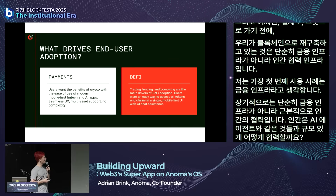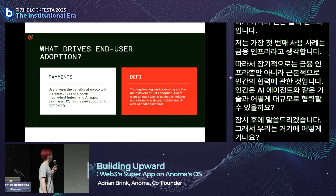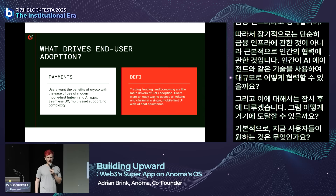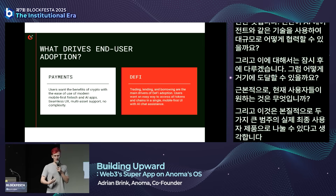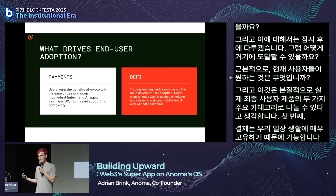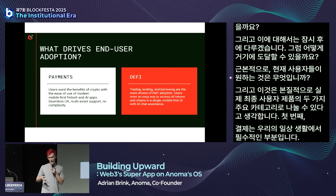How do we get there? What do users want right now? This essentially breaks down to two large categories of end-user products. One being payments, because payments are very native to our everyday life. We've made them better at the edges, but with crypto we can actually make them really good and make them work at scale.